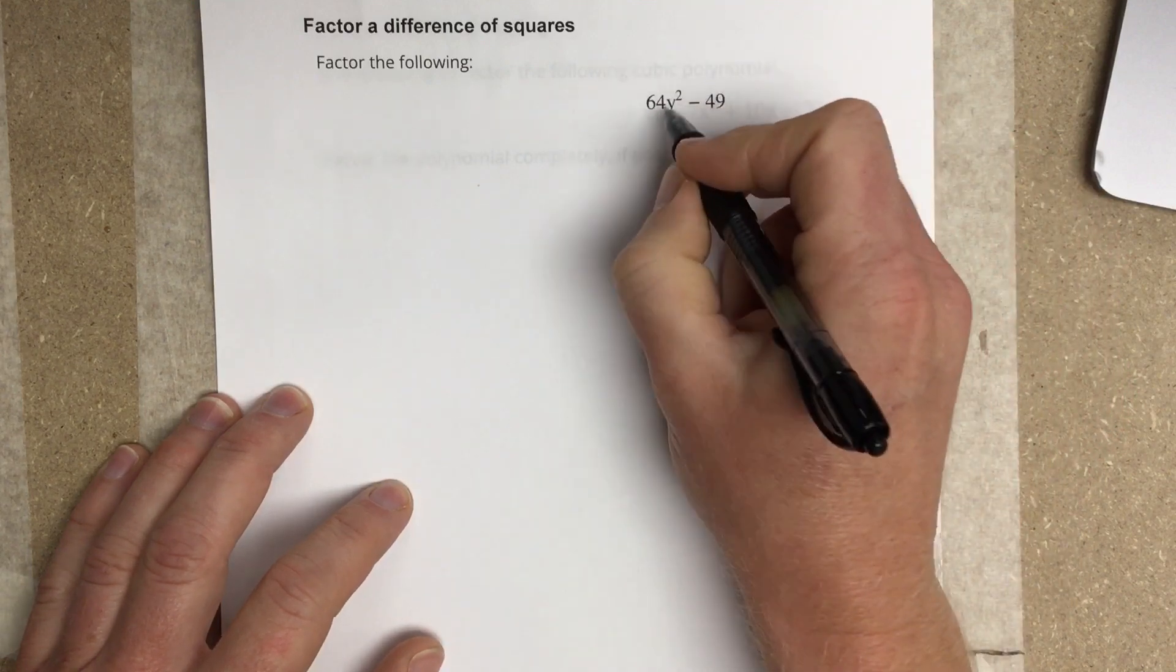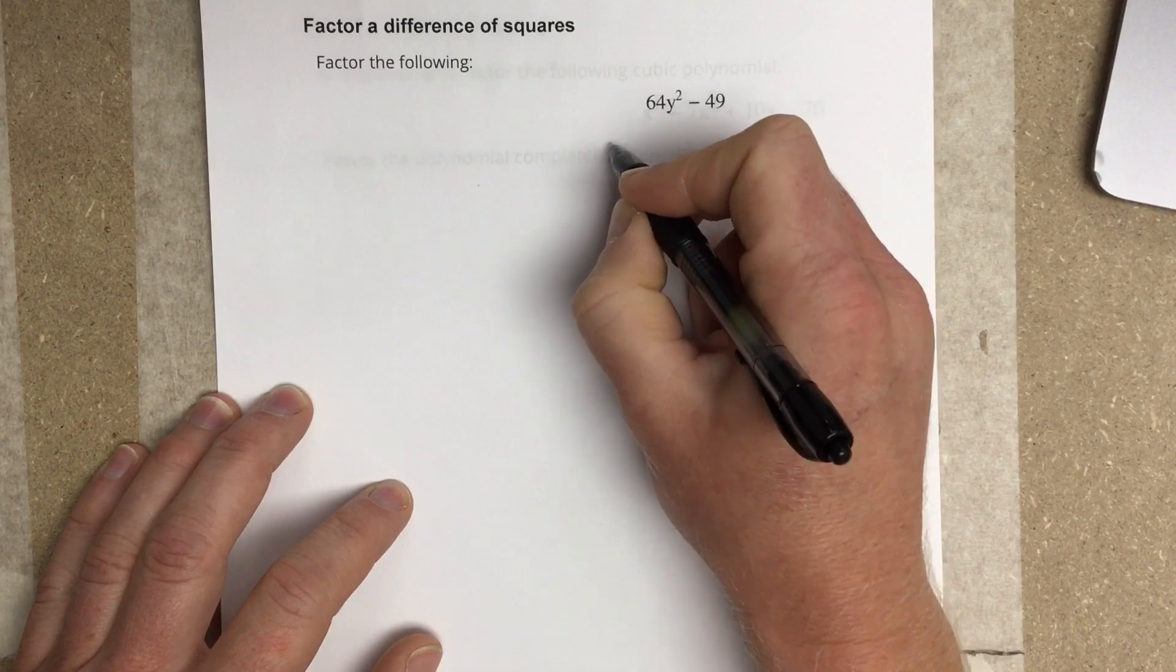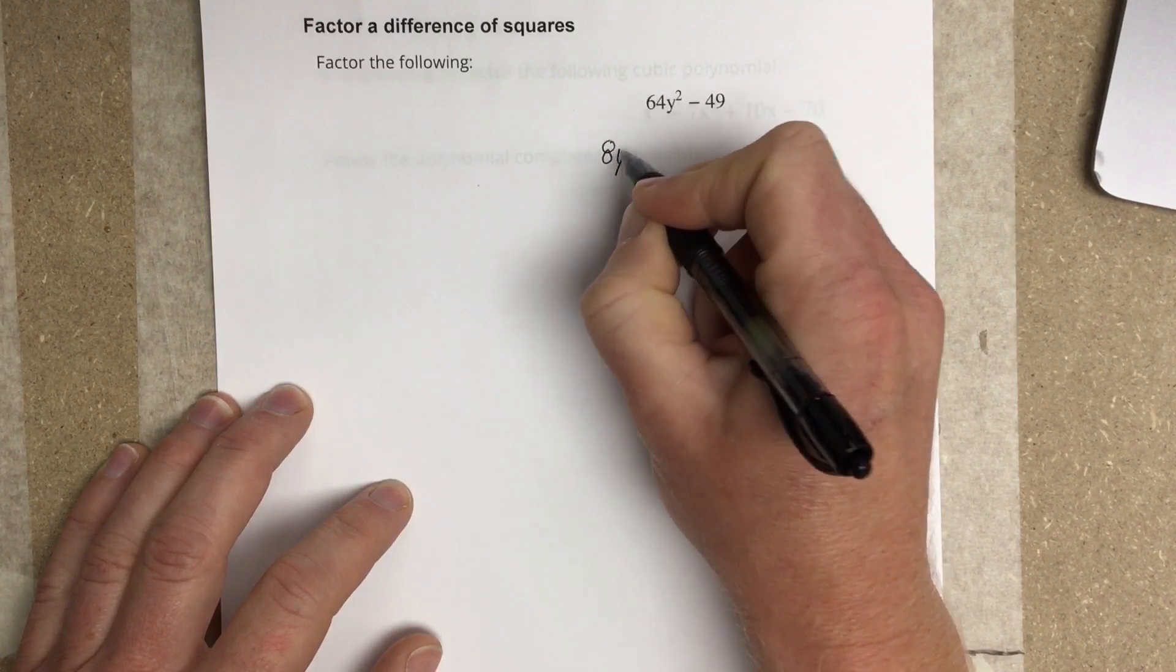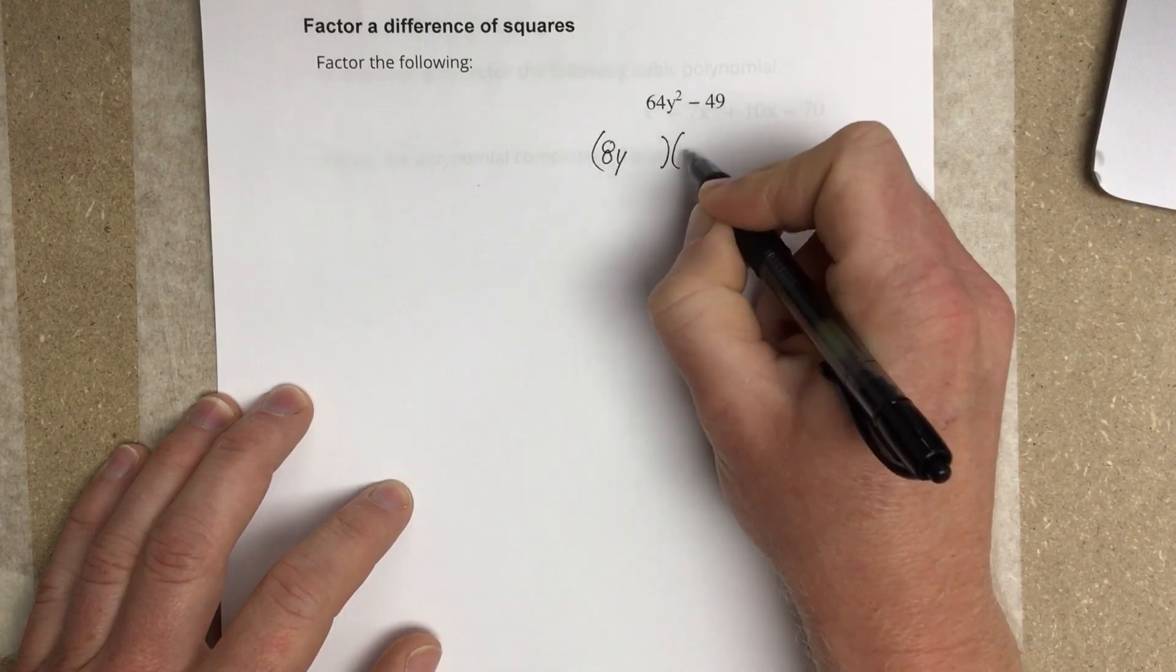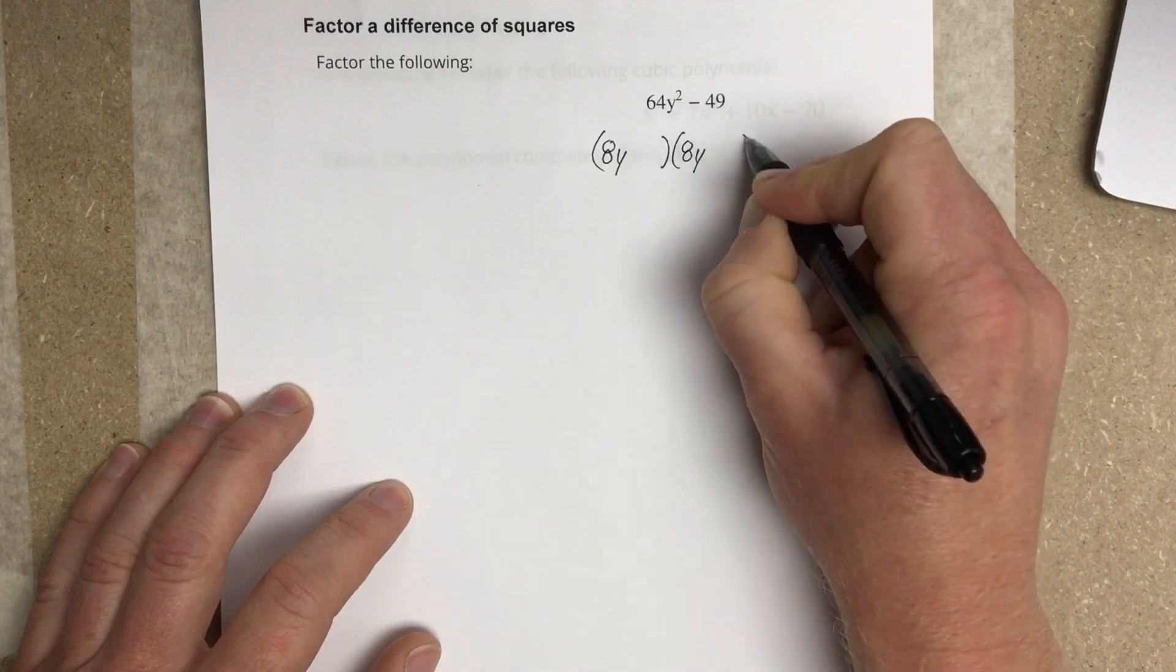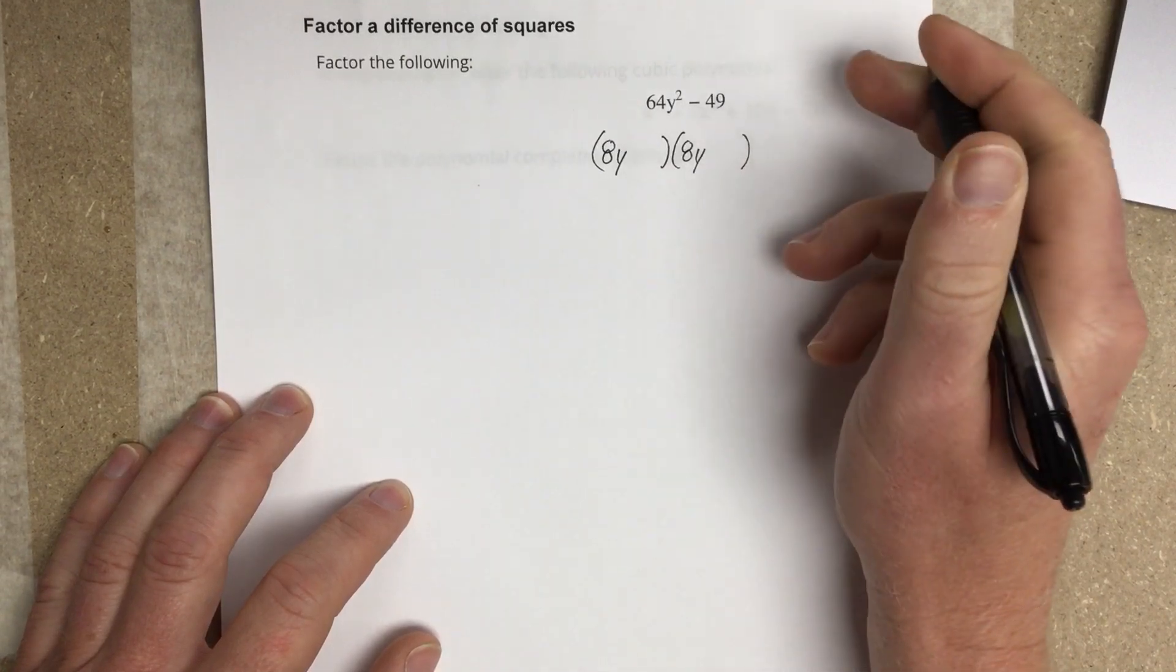So I start with the first term. I basically square root it mentally. So that would be 8y, 8y. And then I square root the 49, which would be 7.